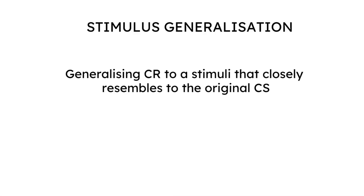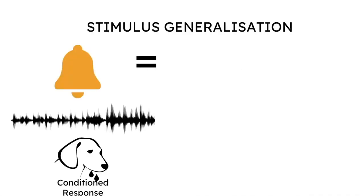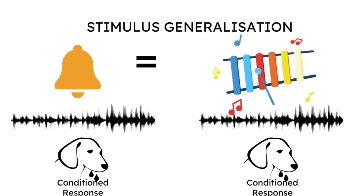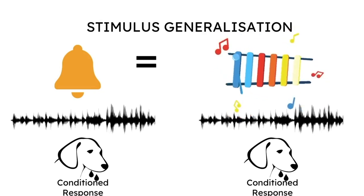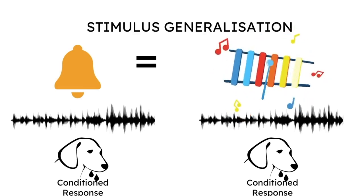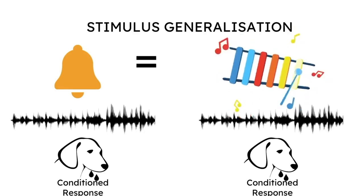Let's understand this with an example. Say if the sound of the bell used to condition the dogs closely resembles the sound of a xylophone, then based on the concept of stimulus generalization, we should observe the dog salivate to the sound of the xylophone alone, although there hasn't been any deliberate conditioning of the dogs with the xylophone. This is the concept of stimulus generalization.